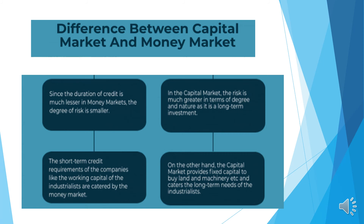The next and last difference: the short-term credit requirements of companies, like the working capital of industries, are met by the money market. On the other hand, the capital market provides fixed capital to buy land and machinery, catering to the long-term needs of industries.